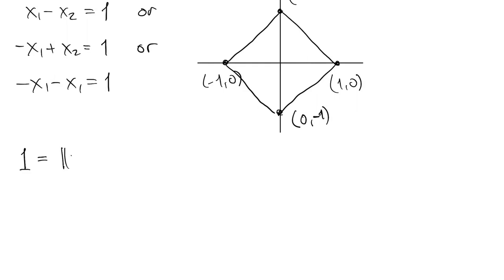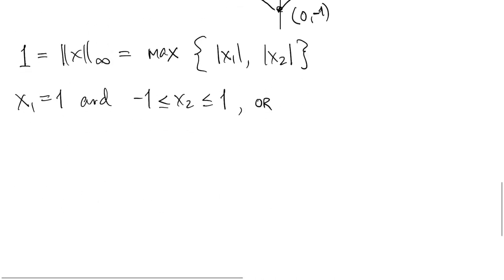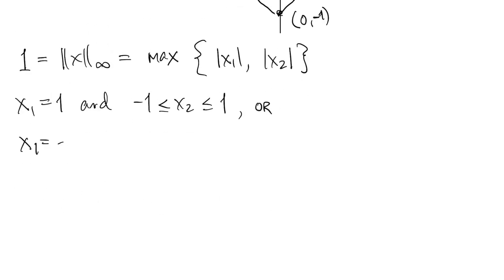Finally, all the unit vectors in the infinity-norm have maximum coordinate equal to 1. So that means either x1 is 1, and x2 is between negative 1 and 1, or x1 could be negative 1, and x2 is in that range, and so on.